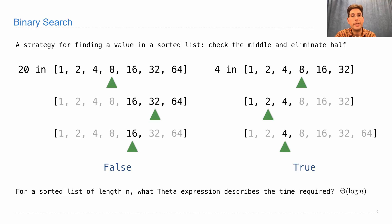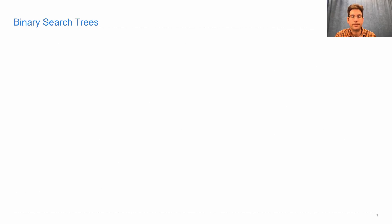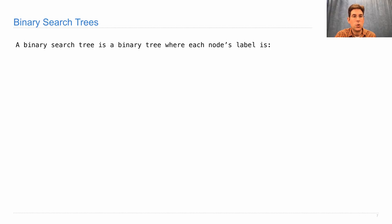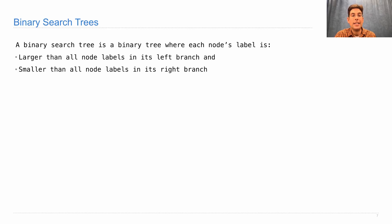Binary search trees are like sorted lists, except they store their values as the labels in a tree. The advantage of doing it that way is that when you add new elements to the tree, it tends to be quicker than adding new elements to a sorted list. It's a binary tree where each node's label is larger than all node labels in its left branch and smaller than all node labels in its right branch.